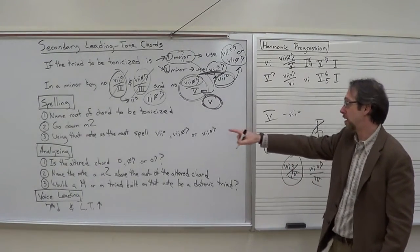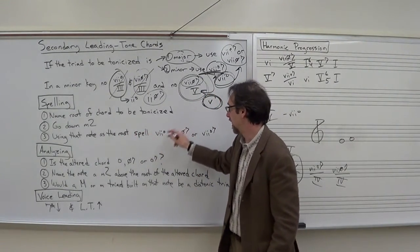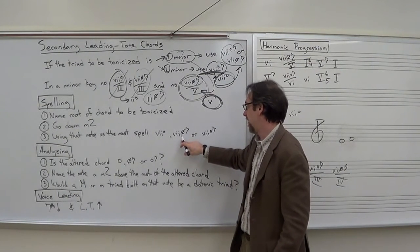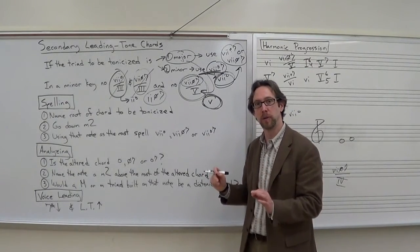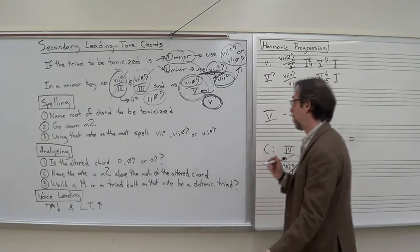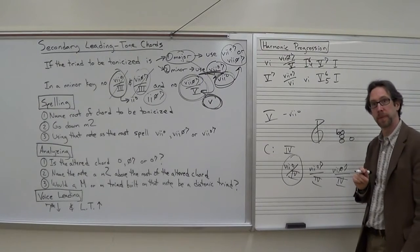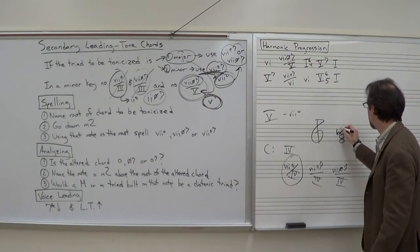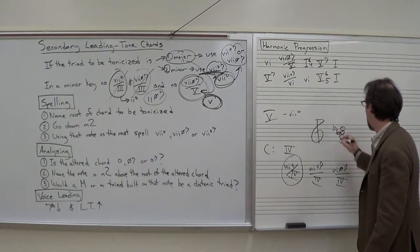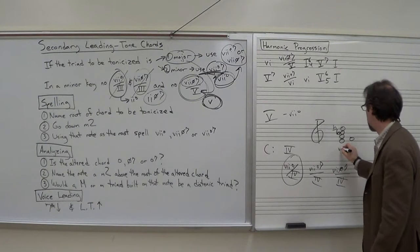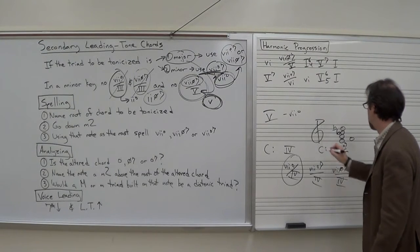Step 3, using that note, the E, as the root, spell either a 7 diminished triad, 7 half diminished 7 triad, or 7 diminished 7 triad based on that note, using that as the root. It all depends on what we want. If we want a triad it would be E, G, B flat. If we wanted it to be half diminished 7 we'd spell the D. If we wanted fully diminished 7 it would be D flat. This we could label as our 7 diminished 7 of 4 in the key of C major.